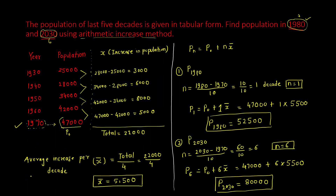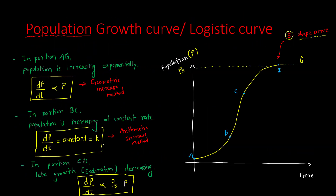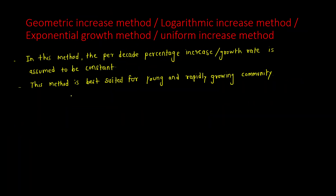As we have seen in the growth curve, the geometric increase method is used when the population is increasing exponentially — that is, when the rate of change of population is directly proportional to P. So we write: dP/dt = K × P.